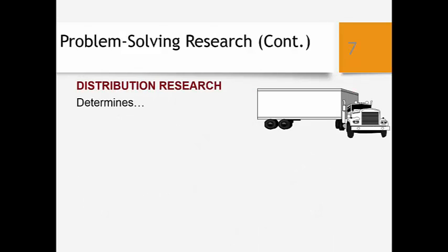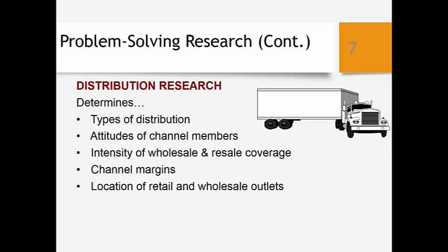The last in the list of problem solving research is distribution research. Marketing research can be conducted to determine channel issues such as the types of distribution, attitudes of channel members about our brands, the intensity of wholesale coverage, channel margins, and the best location of retail and wholesale outlets. You should be able to explain how problem identification research and problem solving research are different and give some examples of each type.